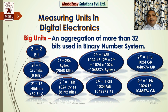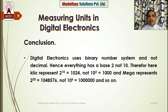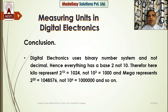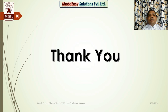Such big units we have in digital electronics. In summary: in digital electronics we use binary number system, not decimal, and hence everything has base 2, not 10. Therefore, kilo represents 2 power 10 equals 1024, not 10 power 3 equals 1000, and mega represents 2 power 20 equals 1,048,576, not 10 power 6 equals 1,000,000. I hope all the measuring units used in digital electronics are now known to you. Please press the like button, share the video among friends, and subscribe to Made Easy Solutions. Thank you.